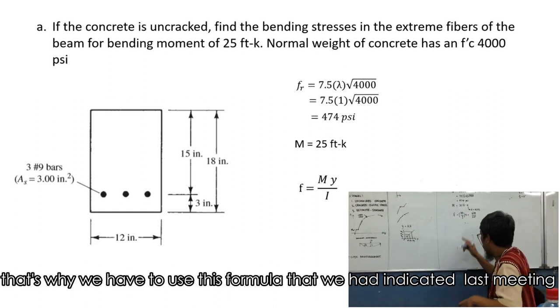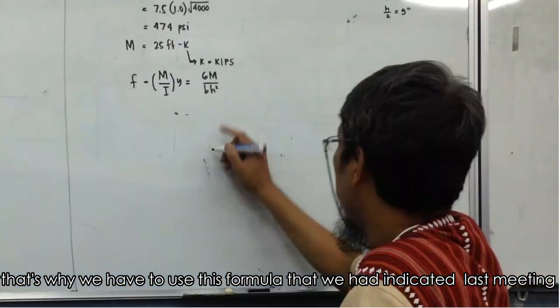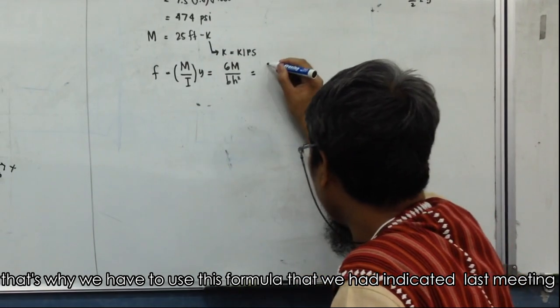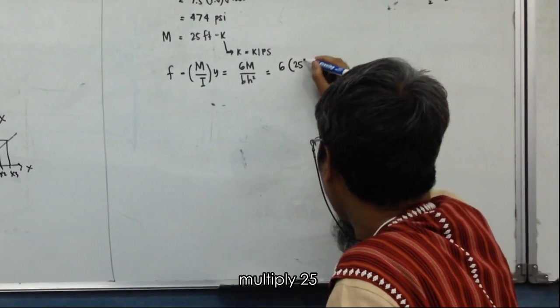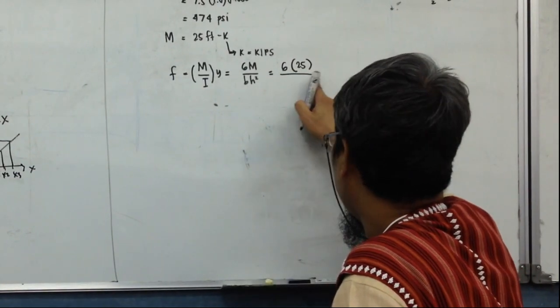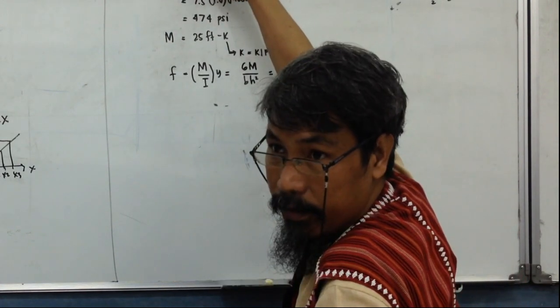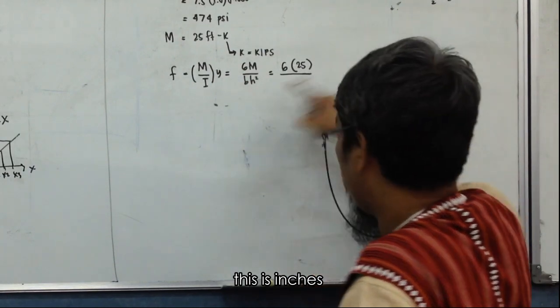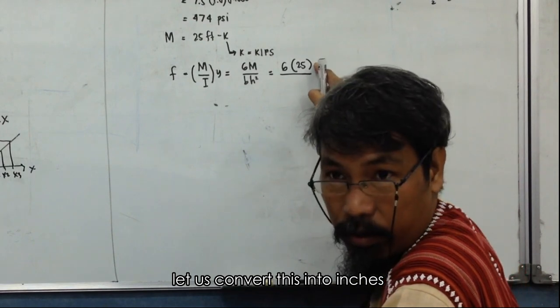That's why we have to use this formula that we indicated last meeting, so we can multiply 25. However, this is feet, this is inches, so let us convert this into inches.